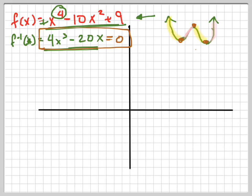So how do I solve that very easily? I factor out a 4x, which will leave me with x squared minus 5. This means that x equals 0. This means, doing this in my head, that x equals plus or minus the square root of 5.